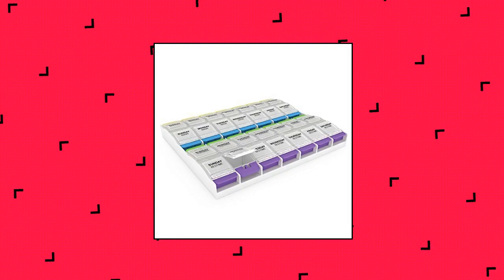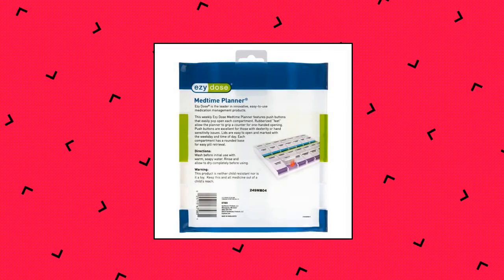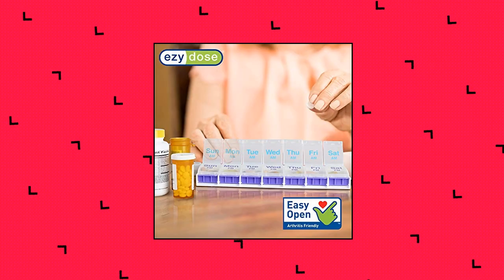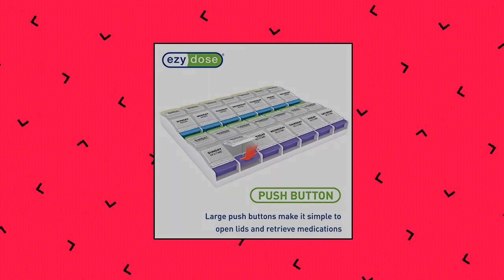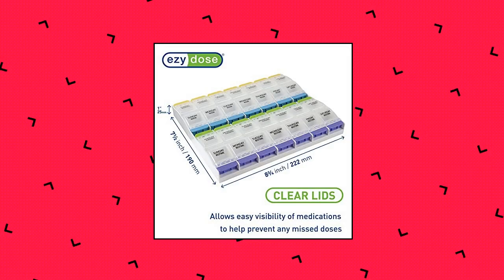Easy dose weekly pill organizer, 7 day pill organizer. AM PM compartments help you to easily plan and distribute your daily doses. Keep medication visible and help prevent missed doses. Holds up to 30 pills per compartment. Built to last, quality design, built to withstand repeated use. Care instructions: wash prior to first use with mild soap and water.